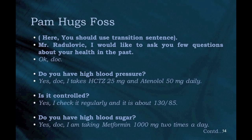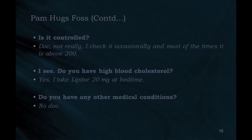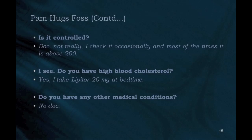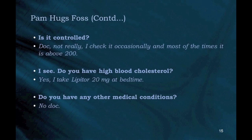Transition sentence: "Mr. Rodulovic, I would like to ask you a few questions about your health in the past." Doctor: "Do you have high blood pressure?" Patient: "Yes, I take hydrochlorothiazide 25 mg and atenolol 50 mg daily. It's controlled — about 130/85." Doctor: "Do you have high blood sugar?" Patient: "Yes, I am taking metformin 1000 mg twice a day, but not really controlled — most of the time it is above 200."